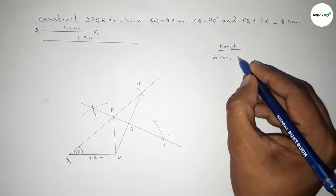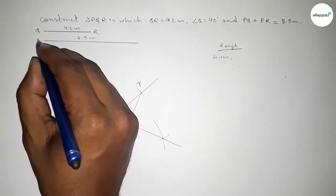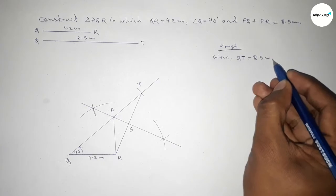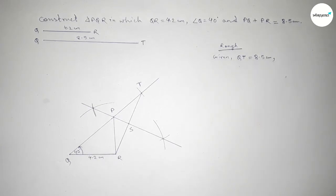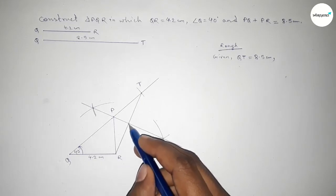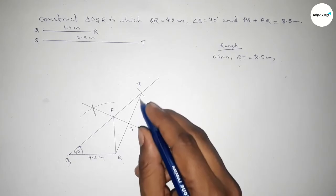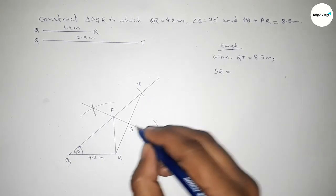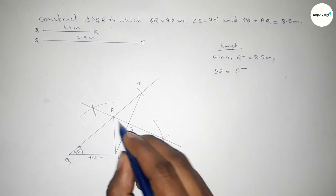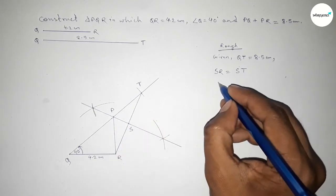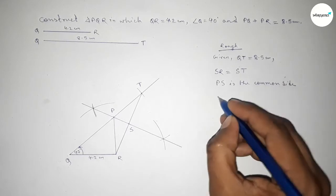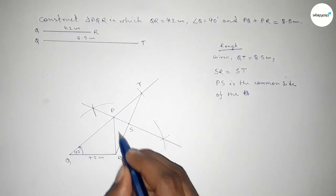Now roughly discussing the calculation. Given: QT equals 8.5 centimeters. The bisector bisects the line RT into two equal parts, so SR equals ST. Next, PS is the common side of the two triangles — triangle PRS and triangle PST.